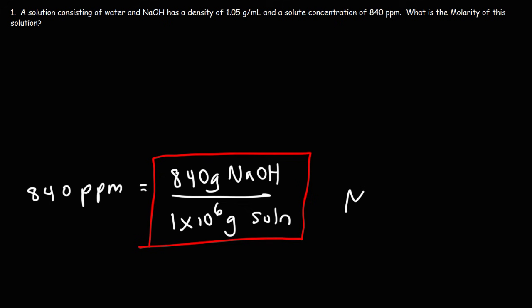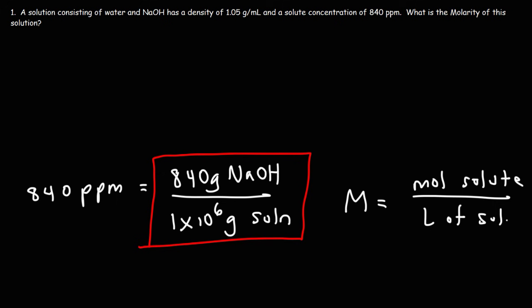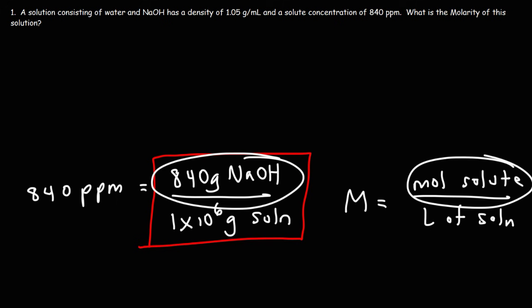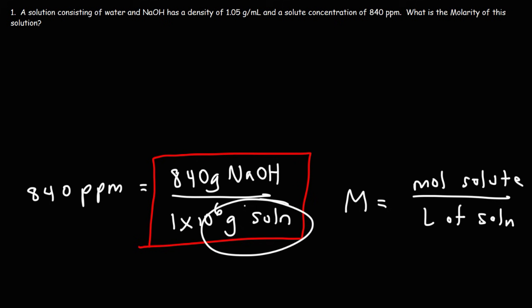Keep in mind, molarity is equal to the moles of solute divided by the liters of solution. So in order to convert from ppm, we need to convert from grams of solute to moles of solute using the molar mass of NaOH. To convert from grams of solution to liters of solution, we need the density of the solution.